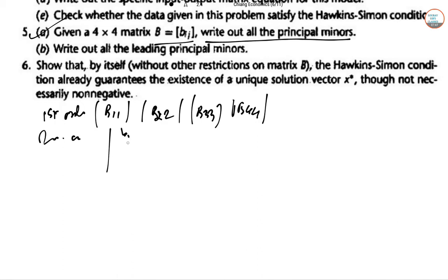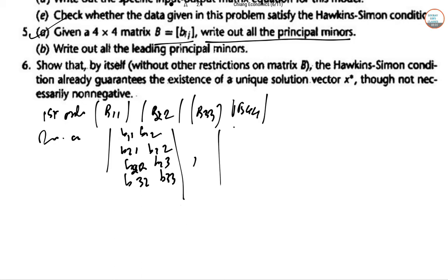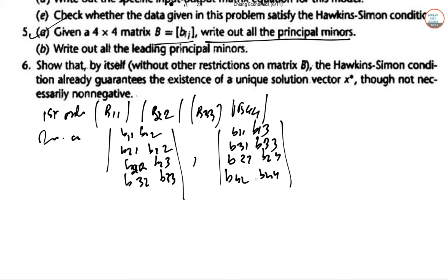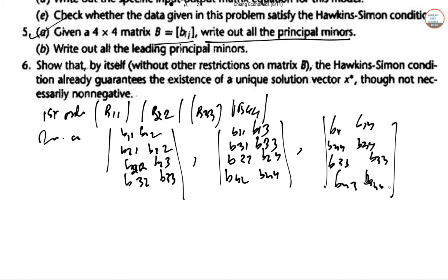For the second-order principal minors, we have the 2x2 submatrices: B12,12 (rows and columns 1,2); B23,23 (rows and columns 2,3); B13,13 (rows and columns 1,3); B24,24 (rows and columns 2,4); B14,14 (rows and columns 1,4); and B34,34 (rows and columns 3,4). For third-order principal minors, we take the 3x3 submatrices: B123,123; B124,124; B134,134; and B234,234, along with their combinations. The fourth-order principal minor is the full matrix B itself.